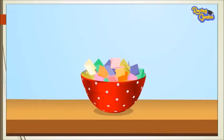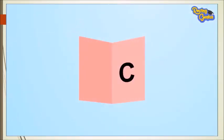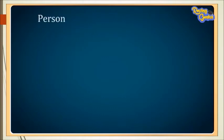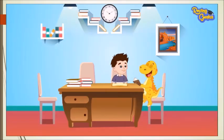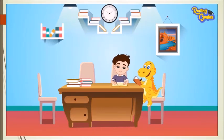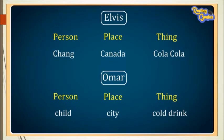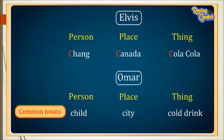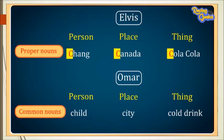Look at this bowl. Select an alphabet. What did you get? Letter C. Now we'll have to list one name each for a person, place, and thing starting from letter C. Let's see who does it first. Time up — time to check the answers. Hey Elvis, why are your answers in capital letters? Because you listed all common nouns and I listed all proper nouns. All proper nouns need to be capitalized.